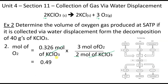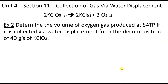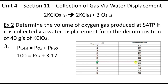Before step three, we need to adjust our pressure — that's the whole point of the water displacement setup. At SATP we're at 25 degrees Celsius (298 K), so the vapor pressure of water is 3.17 kPa. Subtracting from 100 kPa gives an adjusted pressure of 96.83 kPa. Now we can proceed to find the volume of the gas.